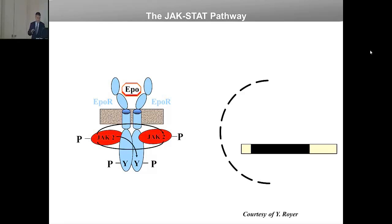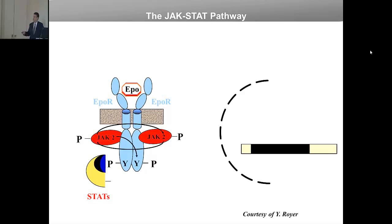This complex is completely inactive, unlike, for example, G protein-coupled receptors, which have a basal activity. When the ligand binds, there is a conformational change in the receptor transmitted to the transmembrane domain, and the two JAK proteins cross-phosphorylate each other at tyrosine residues, which activates their enzymatic activity.